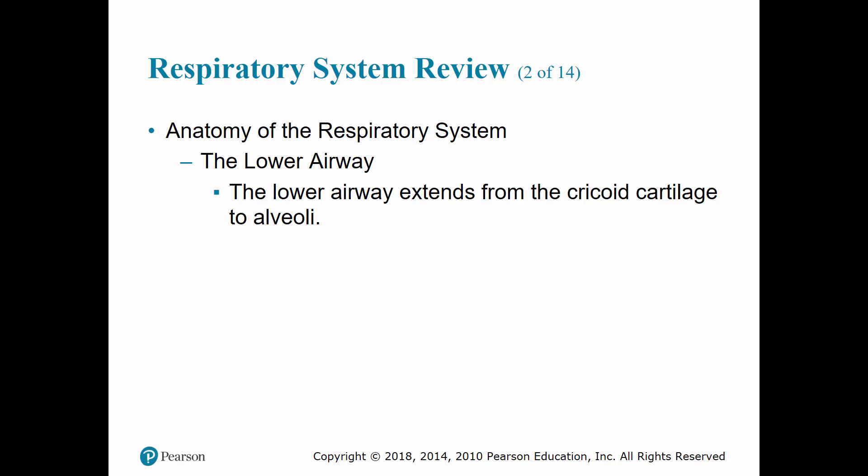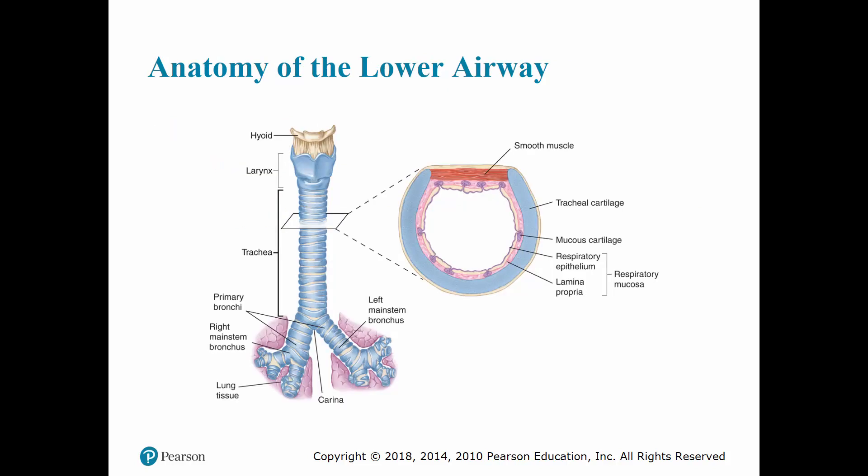Bronchioles differentiate into millions of tiny air sacs within the lungs called the alveoli. The visceral pleura is the innermost covering of the lung. The parietal pleura is a thicker, more elastic layer that adheres to the inner portion of the chest wall. Between the two layers is the pleural space, which is at negative pressure and contains a small amount of serous fluid that acts as a lubricant to reduce friction during breathing.